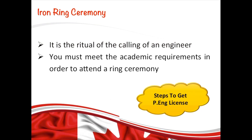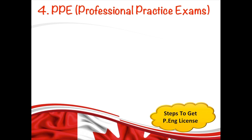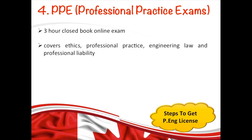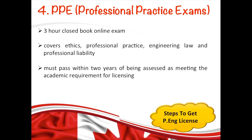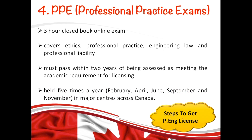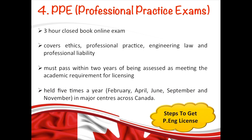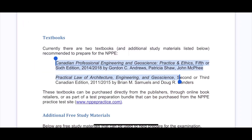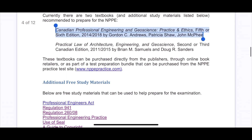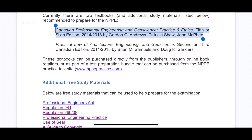After meeting academic requirements, the next step is to write your PPE exam — the Professional Practice Exam. It is a three-hour exam based on two parts: law and ethics of the Canadian and Ontario workplace. You must pass this exam within two years of meeting the academic requirements. You can write it in any of five months during the year. There are two books to refer to — one for ethics and one for law — available at any retailer or bookstore.